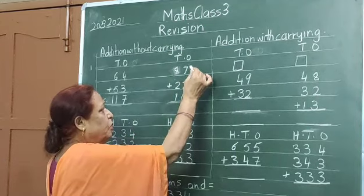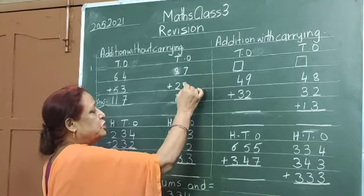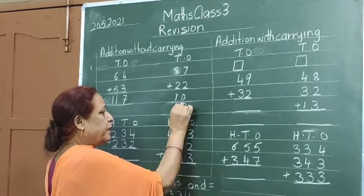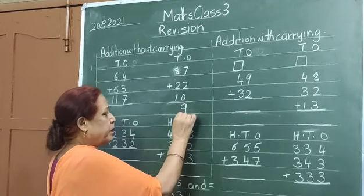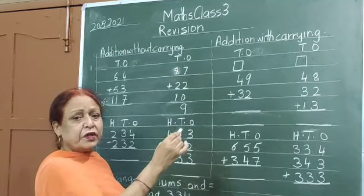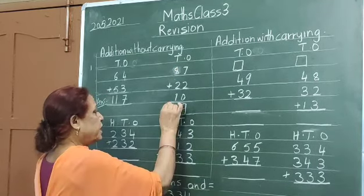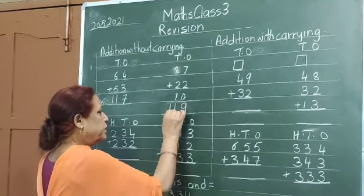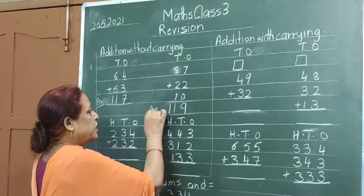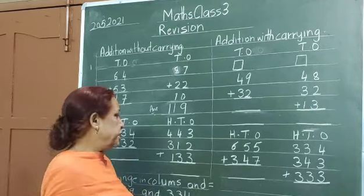Now 7 plus 2 is 9. And 8 plus 2 is 10. And 1? 11. Answer is 119.